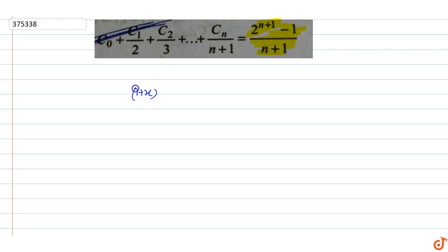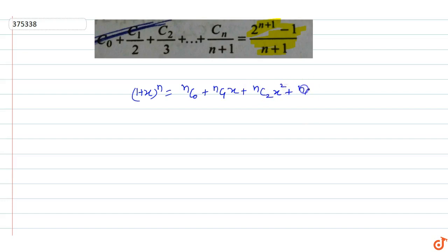First, we know that the expansion of (1 + x) raised to power n is: nC₀ plus nC₁ into x plus nC₂ into x squared plus nC₃ into x cubed, up to nCₙ into x raised to power n.